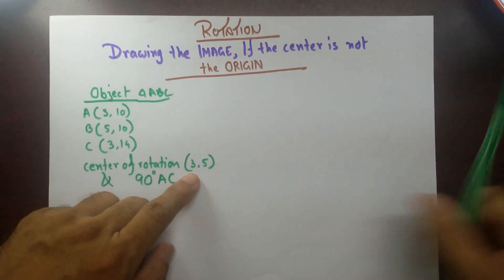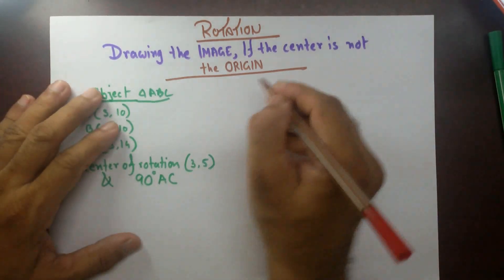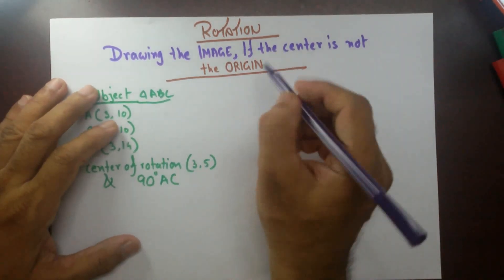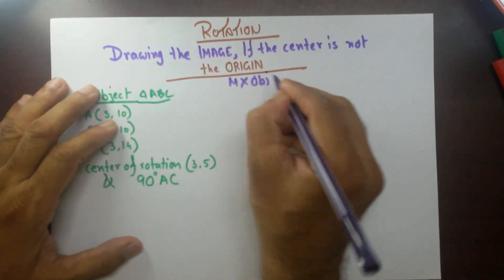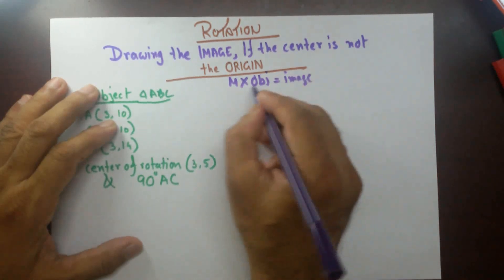If it was 0,0, I could have used that formula. That's a matrix times object equal to the image.